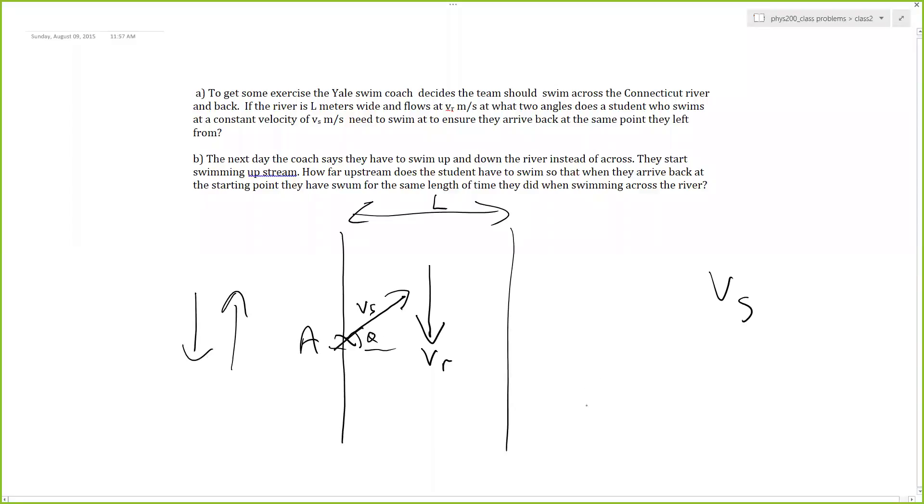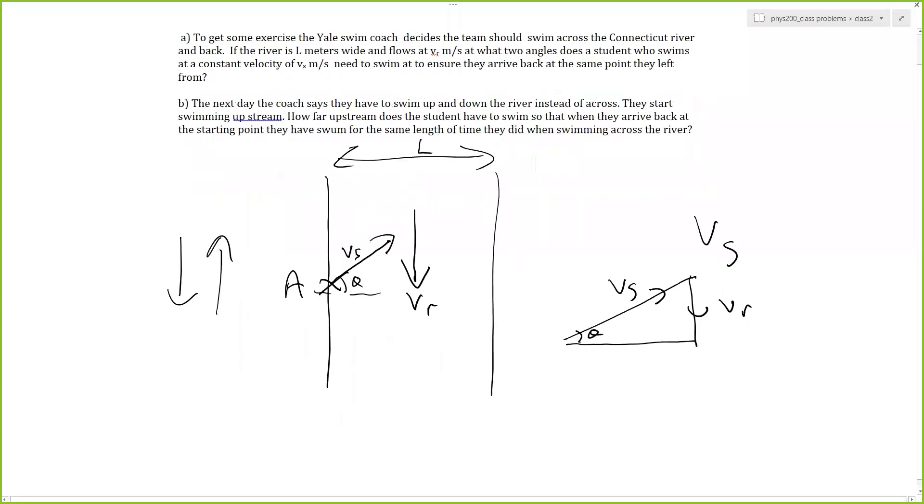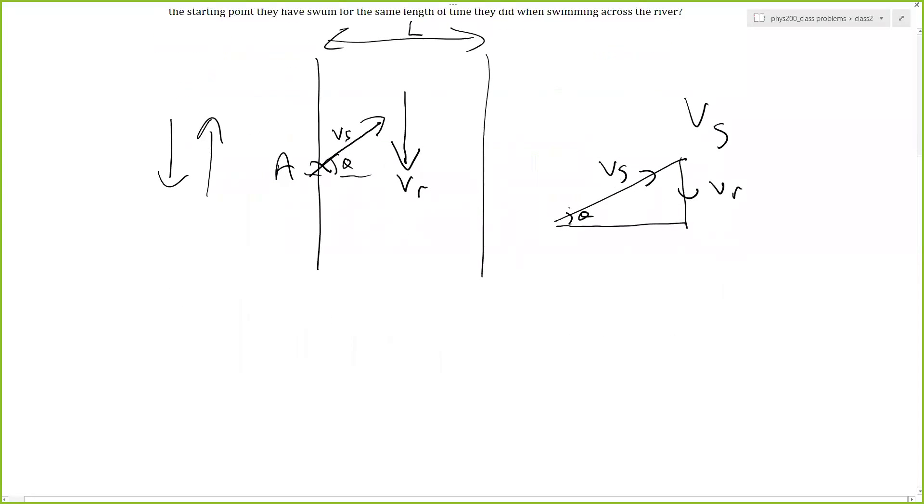And essentially, the component of Vs in this direction needs to cancel out Vr. So we can draw a little triangle. And we can see for this, we would have Vs here, here's theta, this would be Vr, this would be Vs.